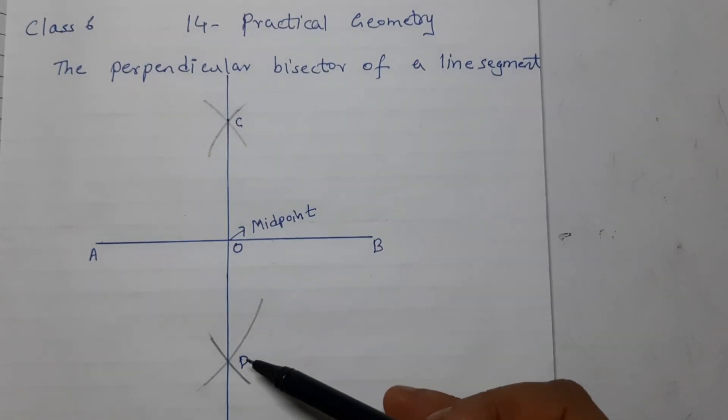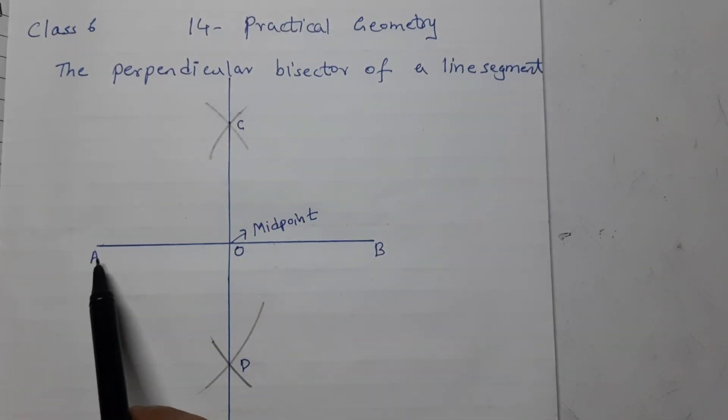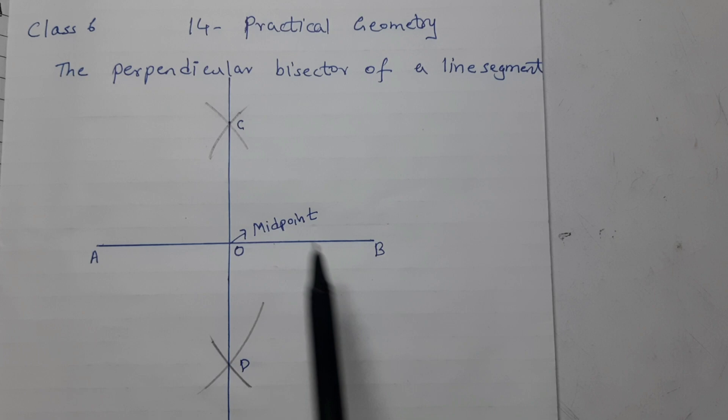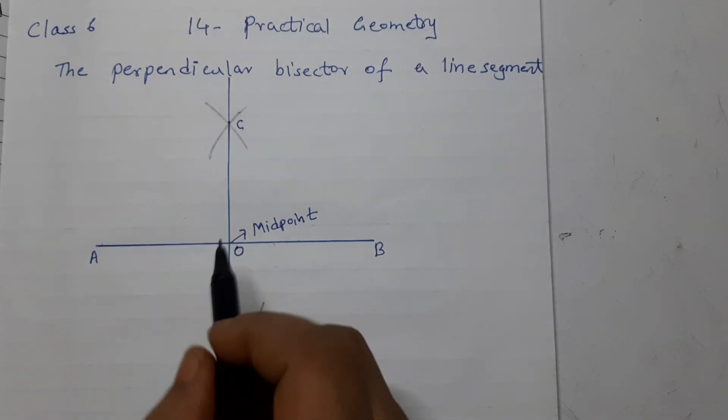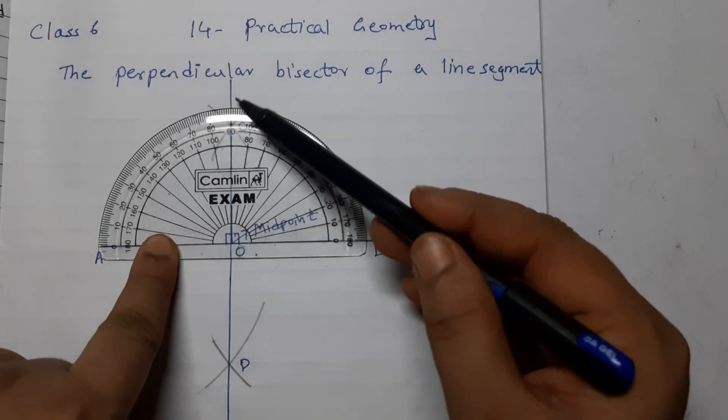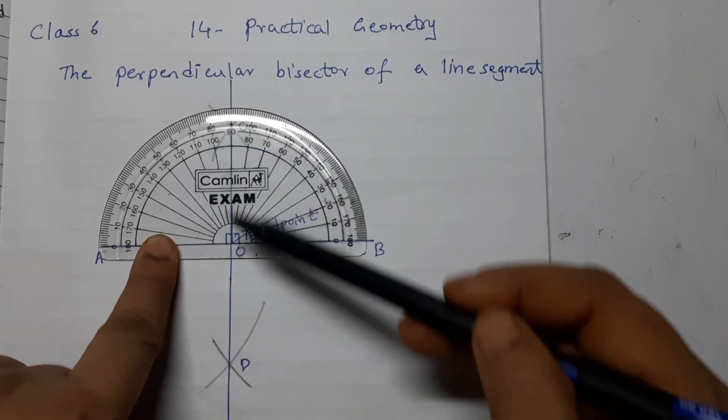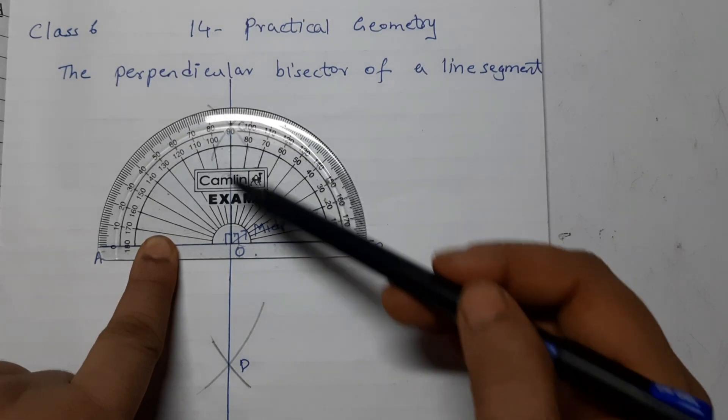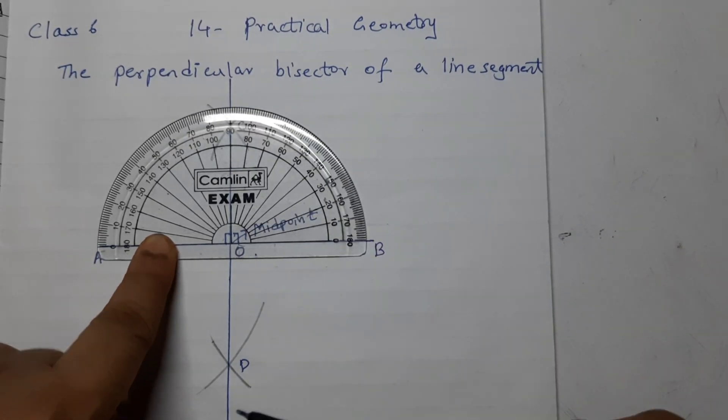CD is the perpendicular bisector of AB. Perpendicular means it is making 90 degree angles here and here. We can check with the protractor if you want. Angle COA and angle COB are 90 degrees.